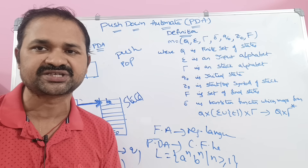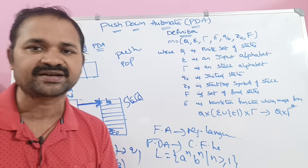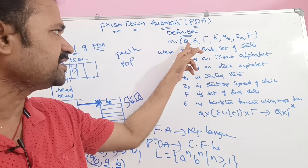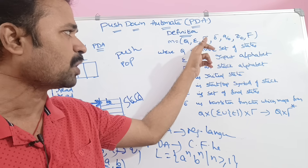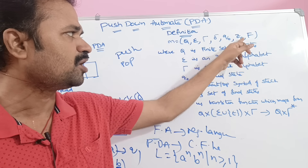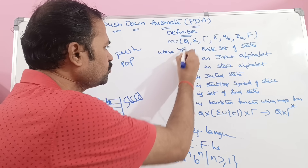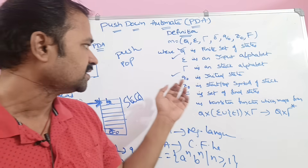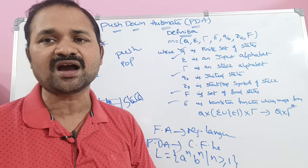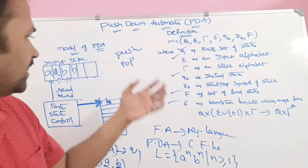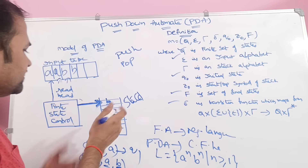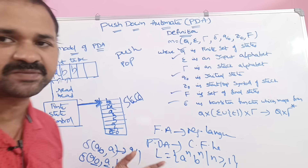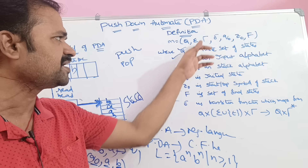The stack produces mainly two states: either accepted state or rejected state. Now let us see the definition of the PDA. PDA is defined by seven tuples: Q, sigma, tau, delta, Q naught, Z naught, and F. Sigma is nothing but the input alphabet. Tau means stack alphabet — the symbols that are stored in the stack are specified by the tau symbol. Stack alphabet contains several symbols like A, B, and so on.